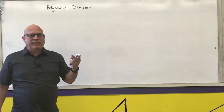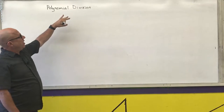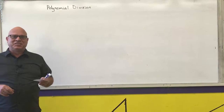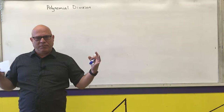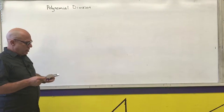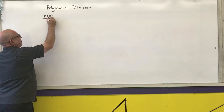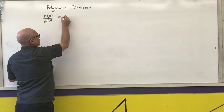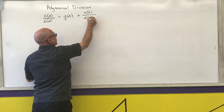We have already learned how to add, subtract, and multiply polynomials. Today we're going to learn how to divide polynomials using long division. We do polynomial long division pretty much the same way as regular long division. What we want to do is turn a polynomial divided by a polynomial — numerator over denominator — into a quotient polynomial plus the remainder divided by the original denominator.